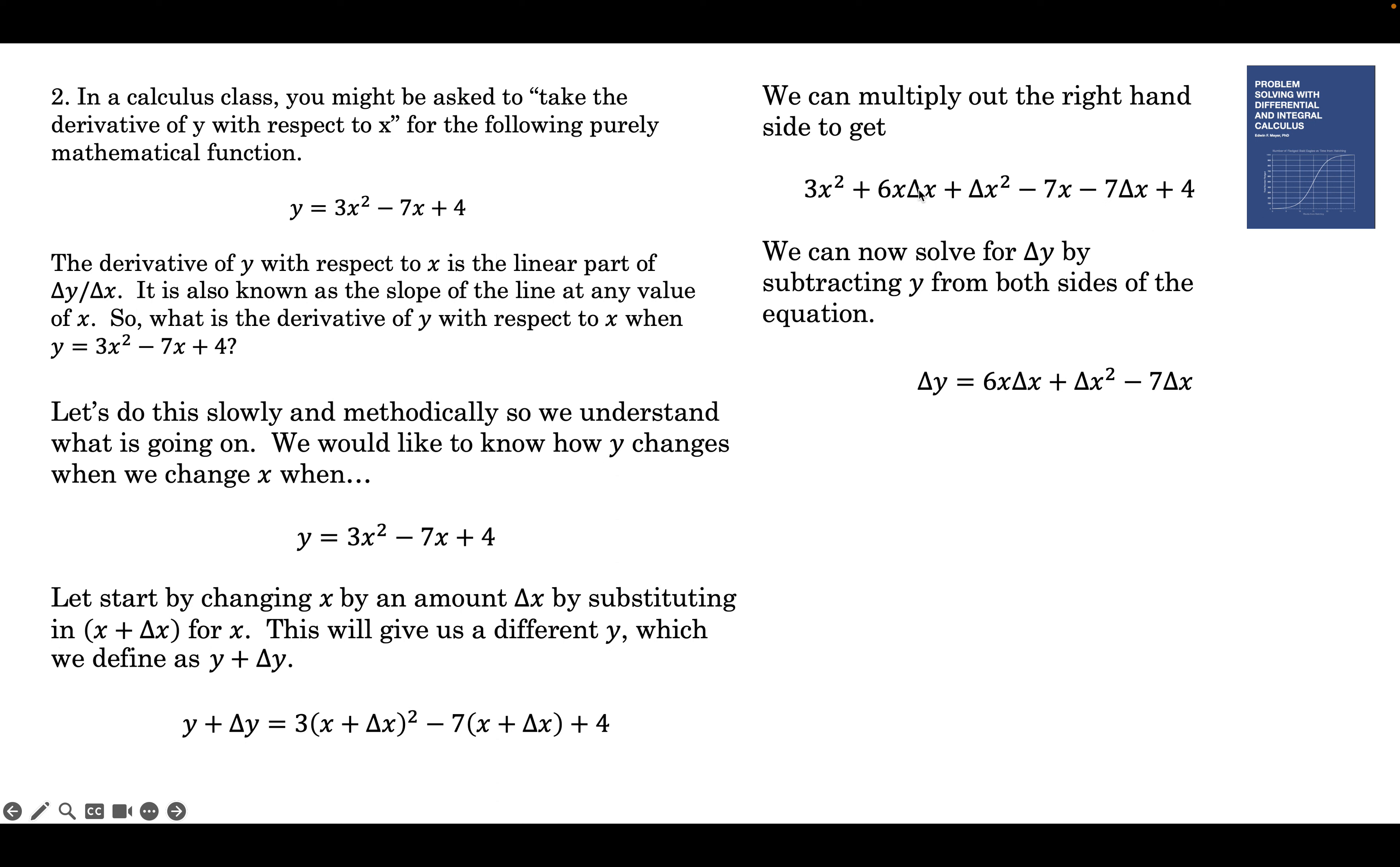The difference is this part. This, this, and that. So now we have that. The linear part of the right-hand side is the parts with the Δx in them. The smaller Δx gets, the smaller this term gets relative to the other two. So for the linear part, we can drop this Δx squared term. There's the linear part. And now we can solve for Δy over Δx just by dividing by Δx. By getting rid of the Δx by dividing by it, we get 6x minus 7.